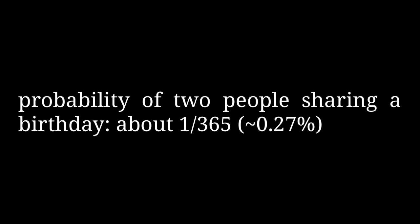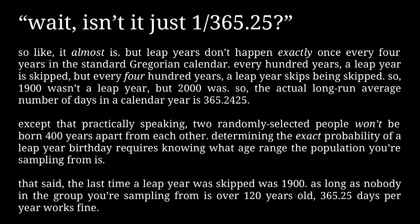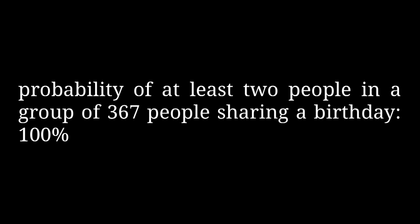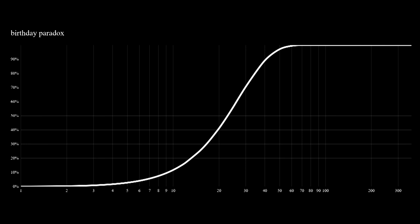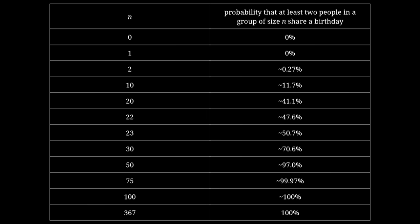In a room with two randomly selected people, there's around a 1 in 365 chance they'll have the same birthday. But if you have 367 people in the same room, the chance that at least two share a birthday is 100%, because there aren't enough birthdays for everyone to have a different one. Somewhere between two people and 367 people, the probability of two people sharing a birthday switches from being more likely not to happen to more likely to happen. If you do the math, the answer is much lower than you'd expect: it just takes 23 people for the probability to be greater than 50%.